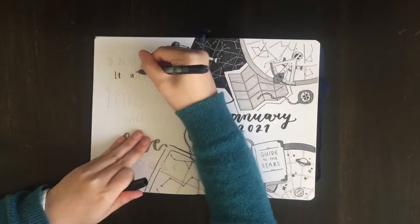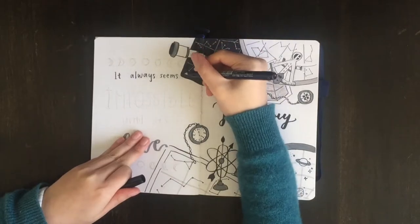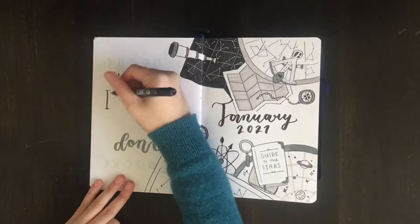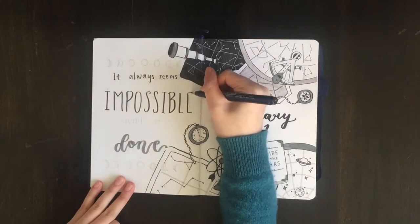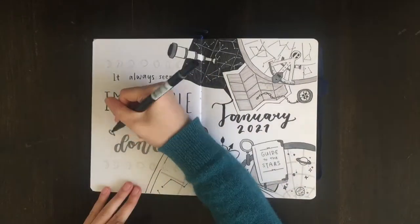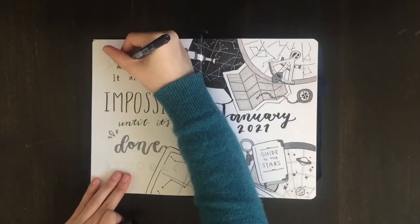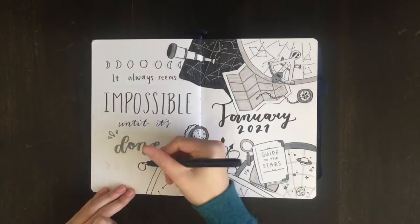On the left side of the page, I am moving on to letter the quote, 'it always seems impossible until it's done.' I think this is a super motivating quote and very fitting, especially for 2021, as we are all hopefully starting our road of recovery from the virus.